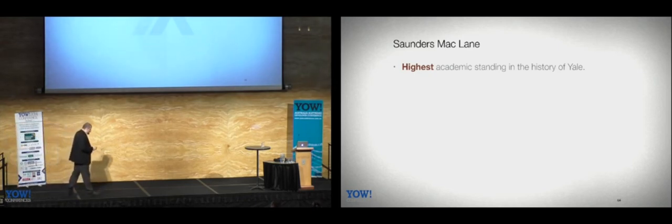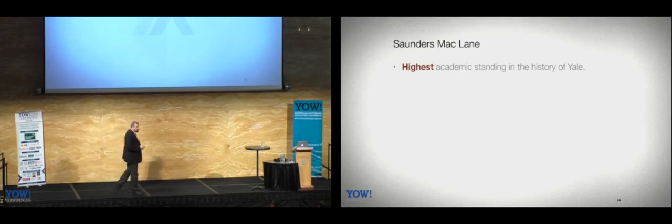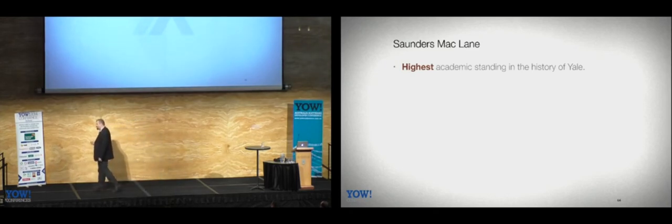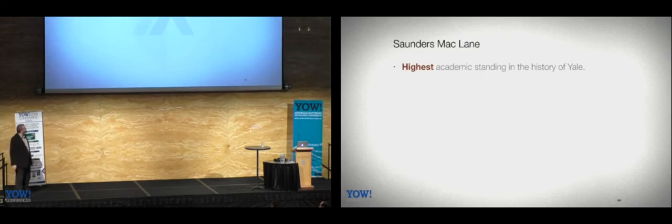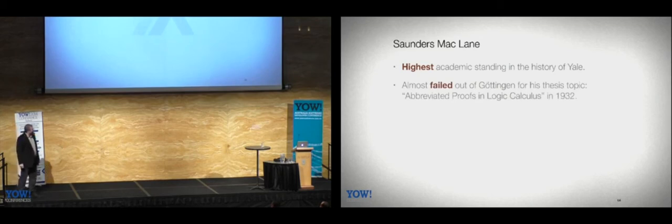And then he went on to go do his PhD. He went to Germany to a university in Göttingen. And at Göttingen he decided he was going to focus on mathematical logic. He tackled what today we would call automated theorem proving in 1932. They didn't really have computers to run it on and nobody there valued anything he was doing in that space. And so he all but failed out of his degree. He managed to pass with the lowest possible mark after his ridiculous standing at Yale. It was kind of a blow to him and now he was in Germany right during the rise of Nazi Germany.